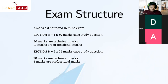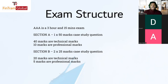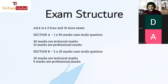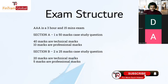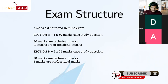Within the 50-mark Section A question, 40 marks are technical marks earned by writing content, and the remaining 10 marks are professional marks dependent on the quality and structure of your answer. In Section B, for each 25-mark question, 20 marks are technical marks and 5 marks are professional marks. So the overall structure is just three questions, answered according to a specific format.